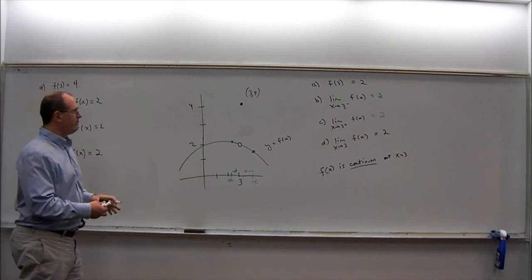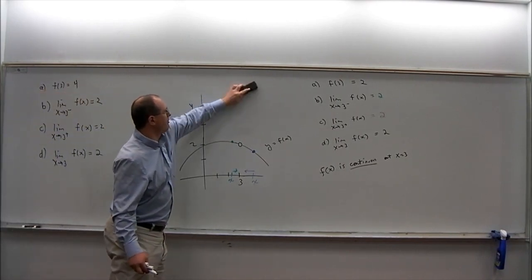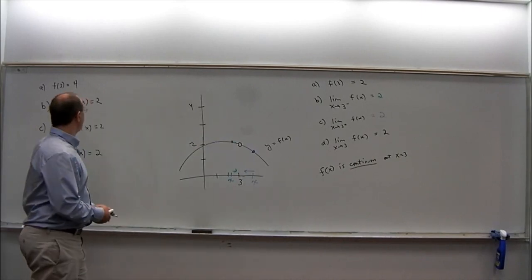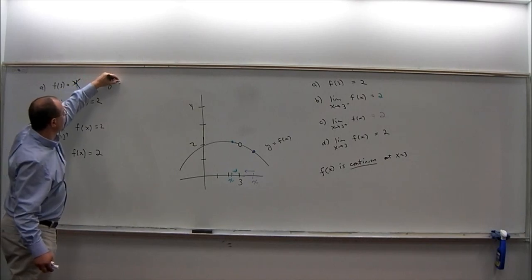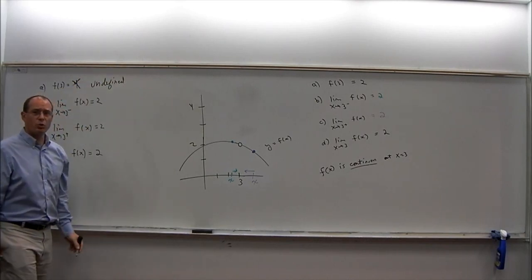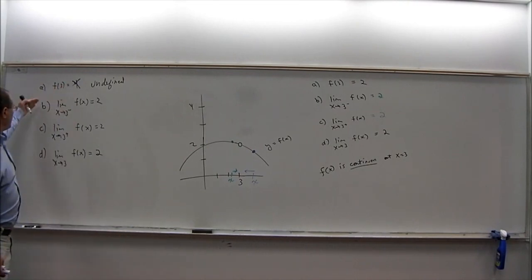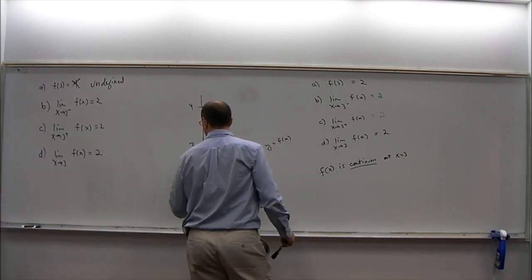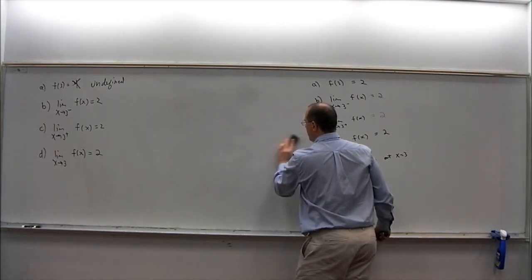As one other example that can be immediately created from this picture, let's just suppose we erase that dot altogether. Now f of three is simply undefined — there is no y-coordinate on the graph corresponding to x equals three — but the limits are still exactly the same.